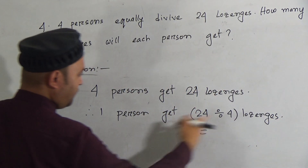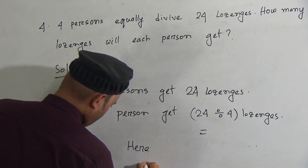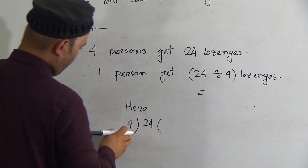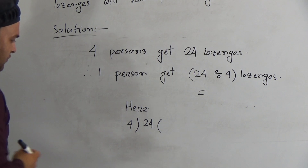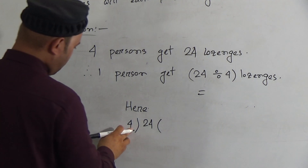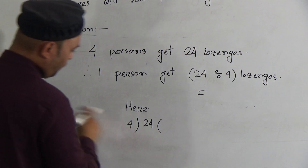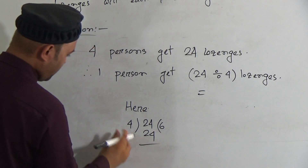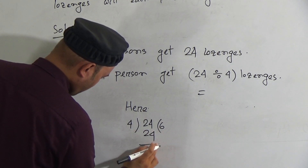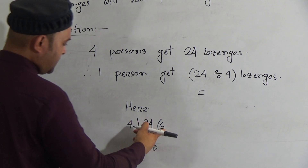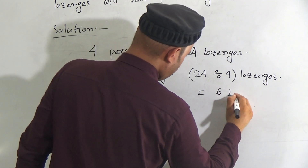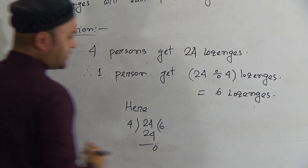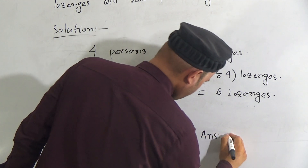You have to divide 24 by 4. Memorize the times table of 4: 4 ones are 4, 4 twos are 8, 4 threes are 12, 4 fours are 16, 4 fives are 20, 4 sixes are 24. So 24 divided by 4 equals 6, with remainder 0. Therefore one person gets 6 lychees. The answer is 6 lychees.